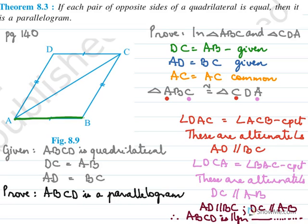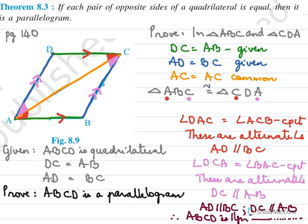Just to recap: AB was equal to DC and AD was equal to BC — both given. AC is common, so the triangles were congruent by SSS. Then by CPCT, the angles were equal, making them alternate angles, so the lines are parallel. With both pairs of opposite sides parallel, the quadrilateral is a parallelogram.